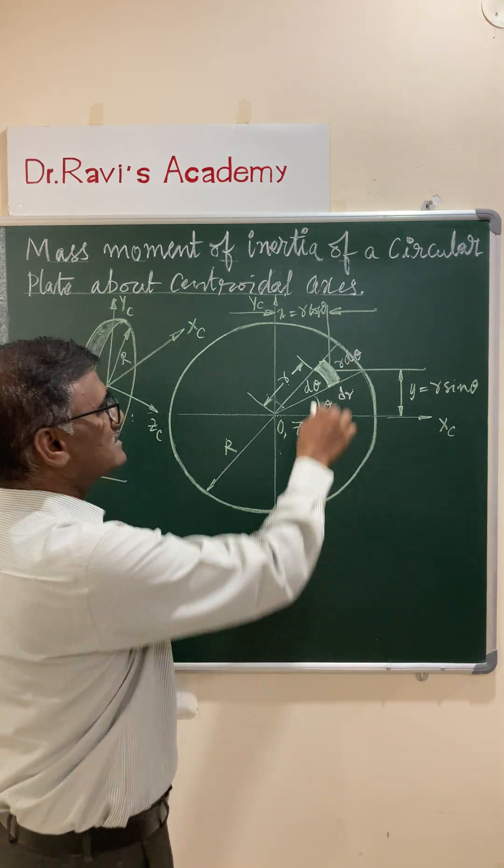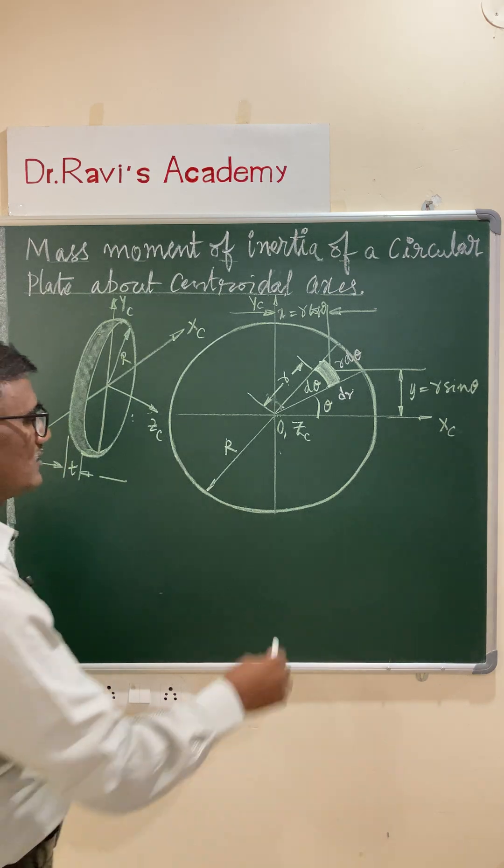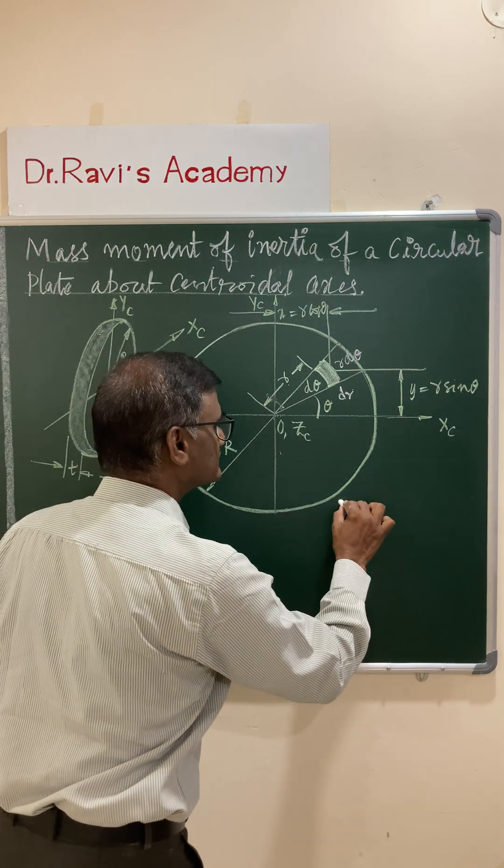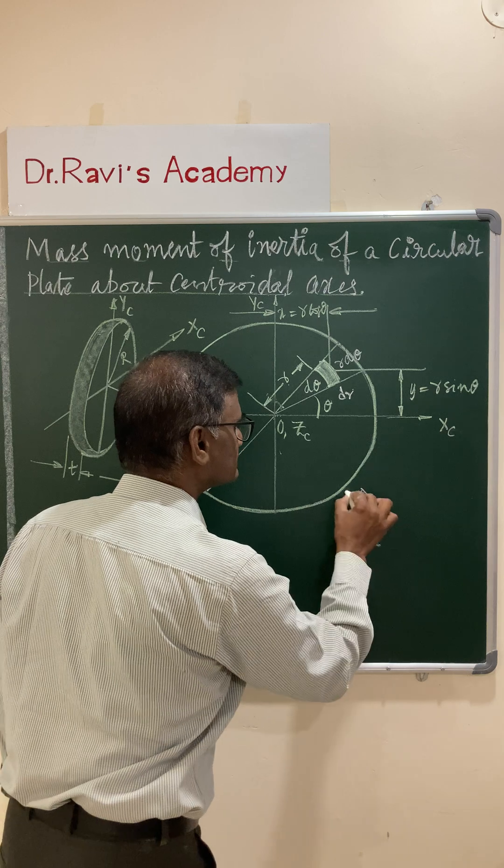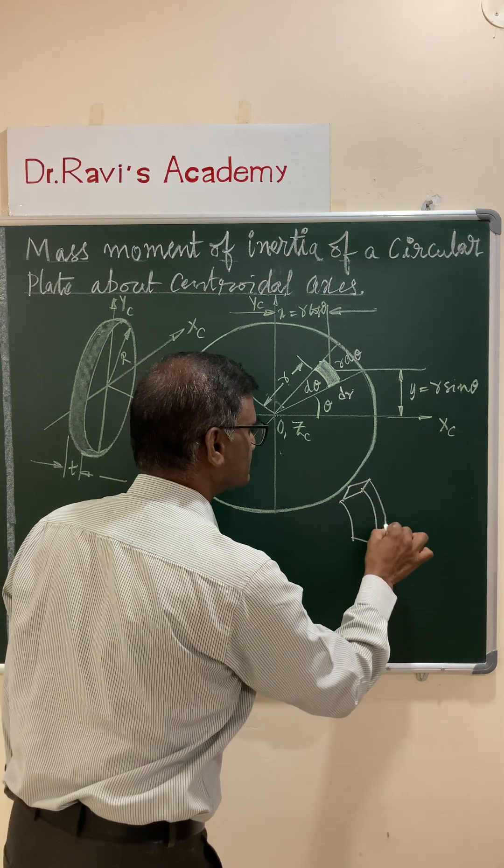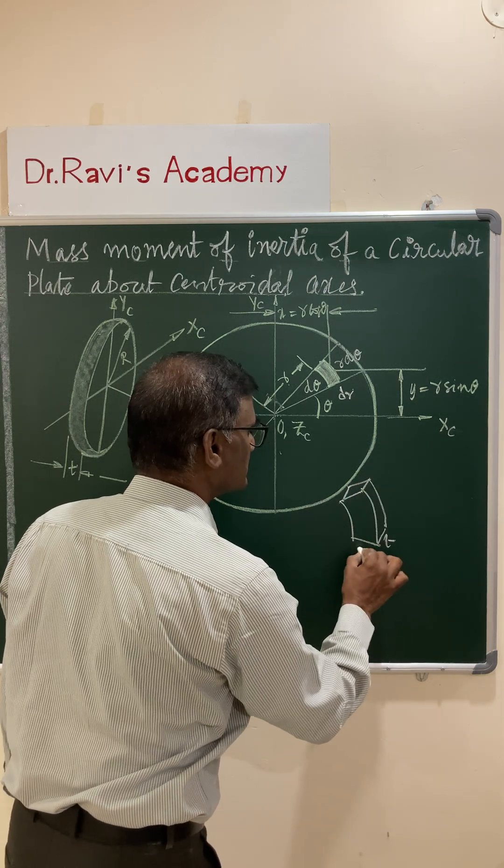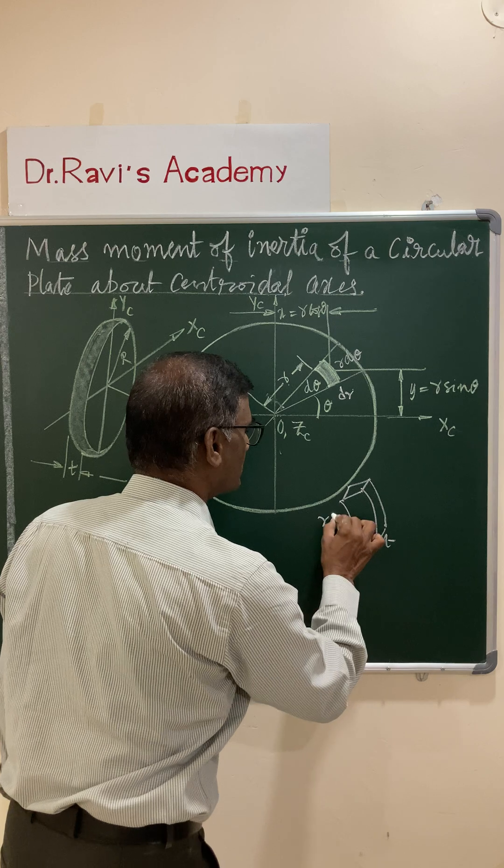This element, let us draw the magnified view of the element. You have certain thickness. This is thickness d and this is dr. This is r d theta.